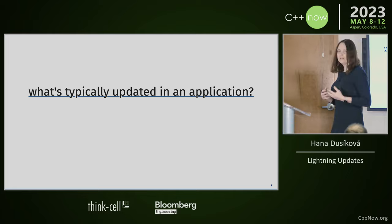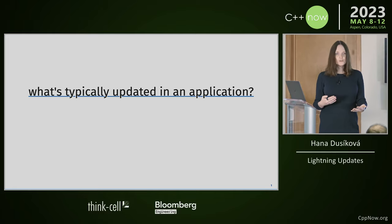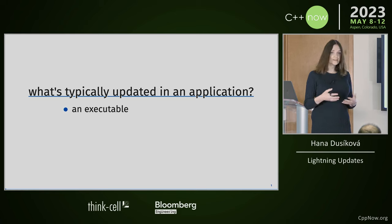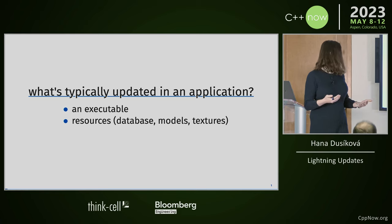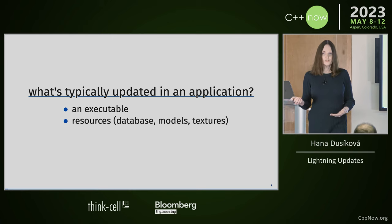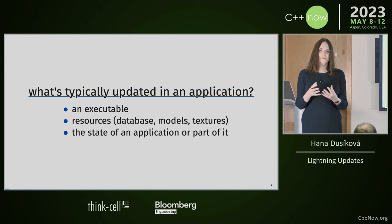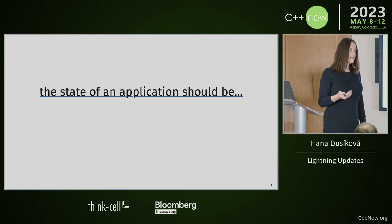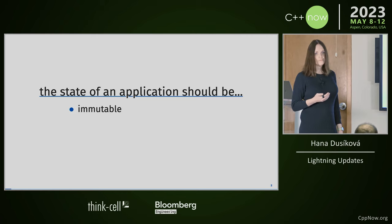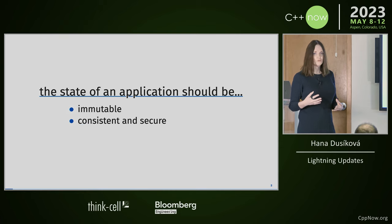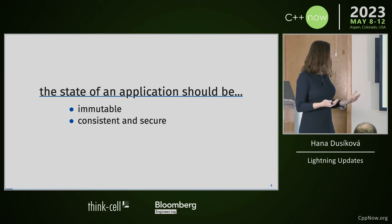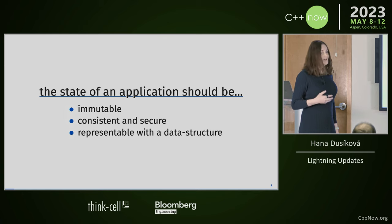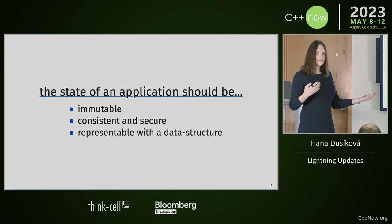Typically when you update something in an application, it's an executable with your code, or it's something like resources — images, database, textures — but generally it's just some state. State of the application should ideally be immutable; users shouldn't change it. It should also be consistent and secure, and because it's a state you can represent it as a value or a data structure.